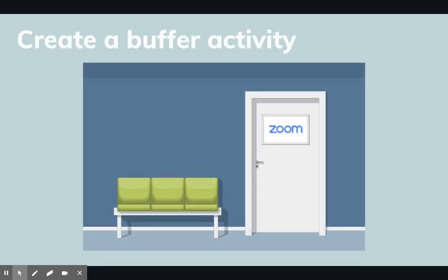Another suggestion is to create a buffer activity for the first five to ten minutes of your meeting. Latecomers can sometimes interrupt the momentum of your activity and throw the students off, so plan for an opening activity that allows for a little bit of that movement. You can create a discussion question, some kind of individual journal activity, or anything you can think of. Once everyone is joined, you can lock the meeting and hit record.